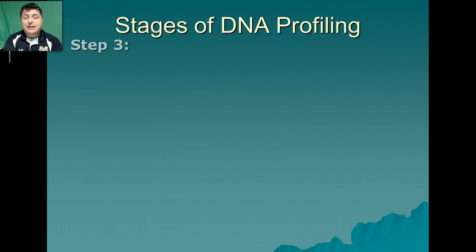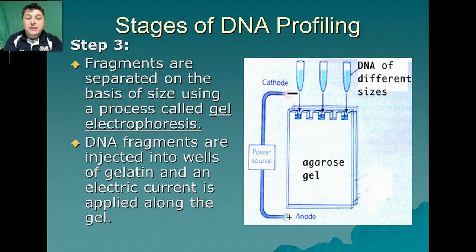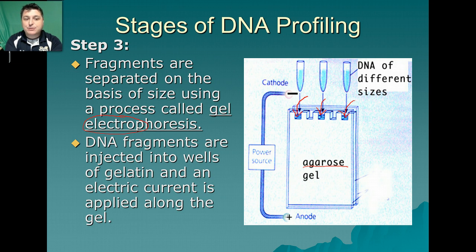To visualize those fragments we need to separate them. We separate the fragments using a technique called gel electrophoresis. The DNA is placed into a gelatin-like substance — injected into little wells in a gel made from algae called agarose gel. This gel allows us to separate those fragments. It's called electrophoresis because an electrical current is applied which helps the DNA to separate.